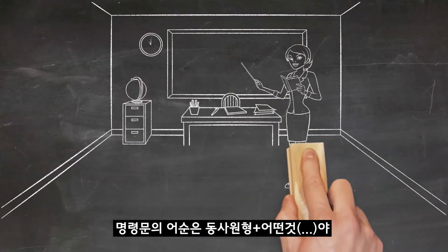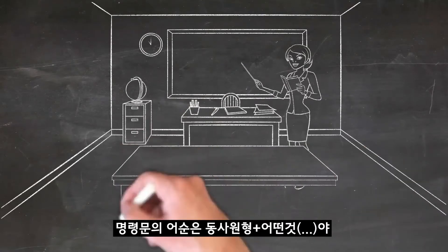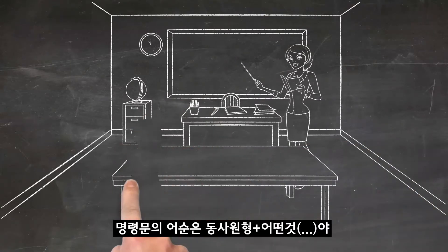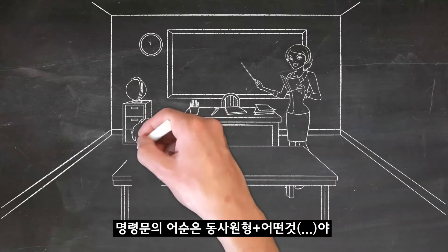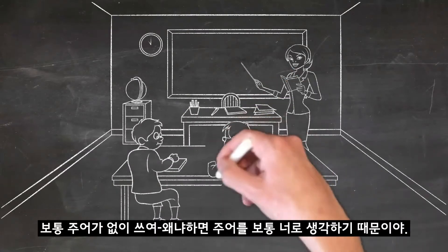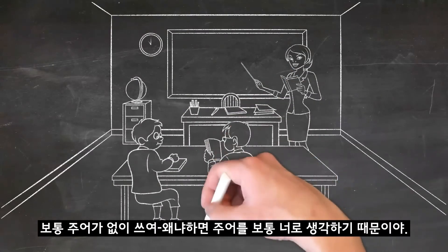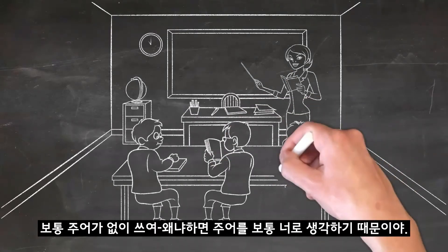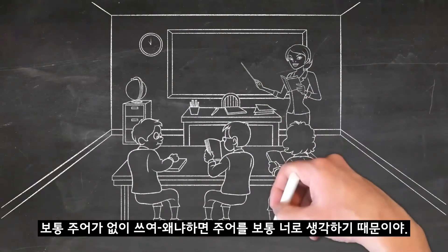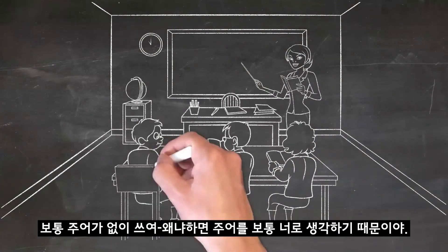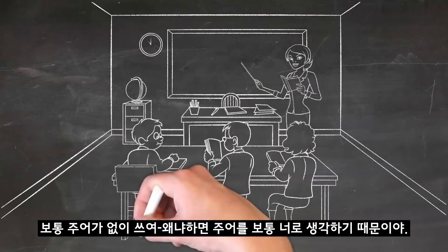The usual order for an imperative sentence is base verb plus something something something. Note that there is usually no subject because the subject is understood or implied — it is 'you.'